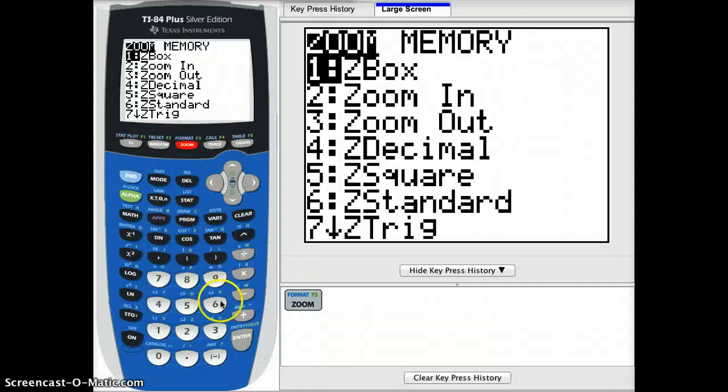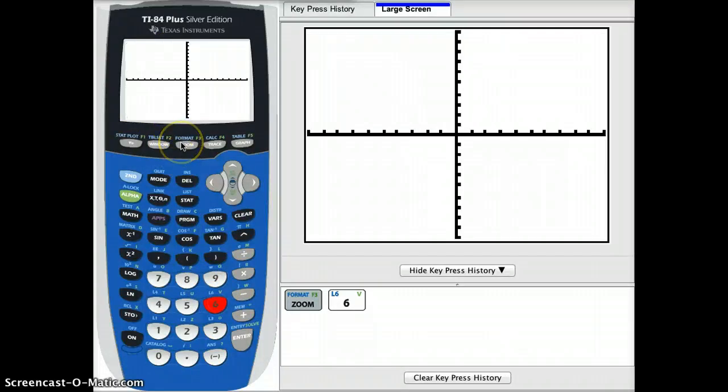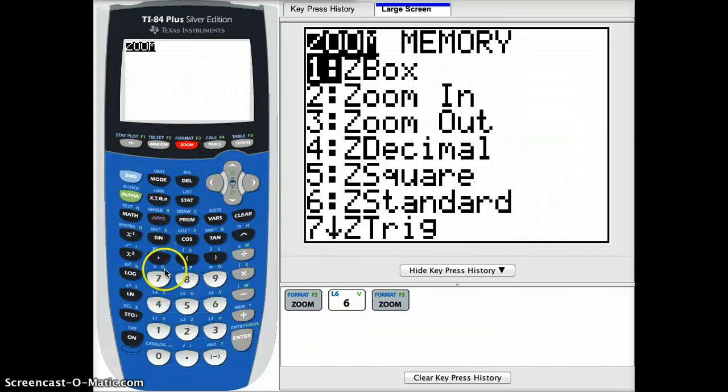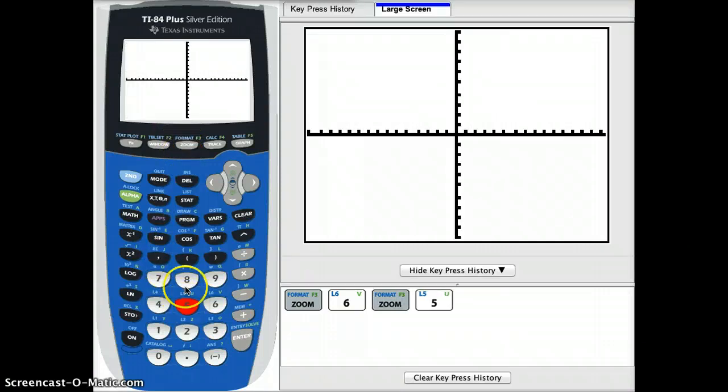And also do a zoom 6, which will reset your window, followed by a zoom 5. The zoom 5 squares up your window, making the units between the x and y axes equal, and that will make your circles round versus oval shaped if you did it in a zoom 6 format.